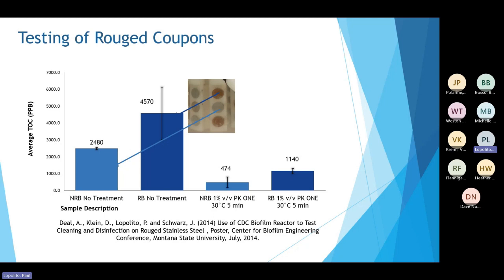And then compared to rouged coupons that was exposed to the same cleaning conditions at 1% of alkaline detergent, at 30C for five minutes, you could see that the cleaning was probably like three times lower and not as good as with non-rouged coupons. So, I mean, the rouged coupons can play a big role in cleanability as well as forming microbes on the surface.